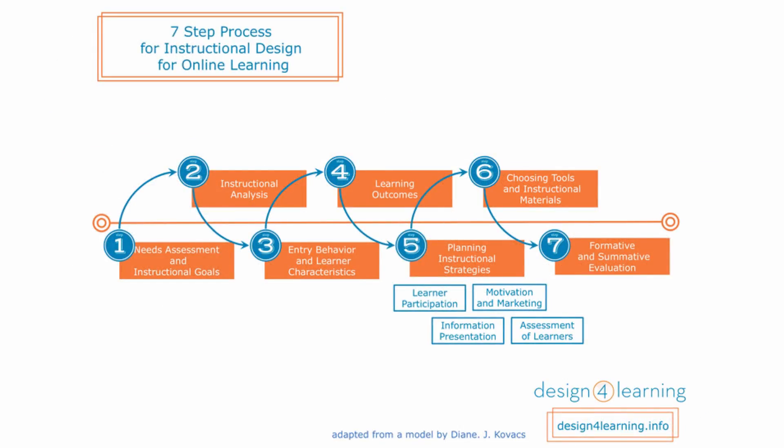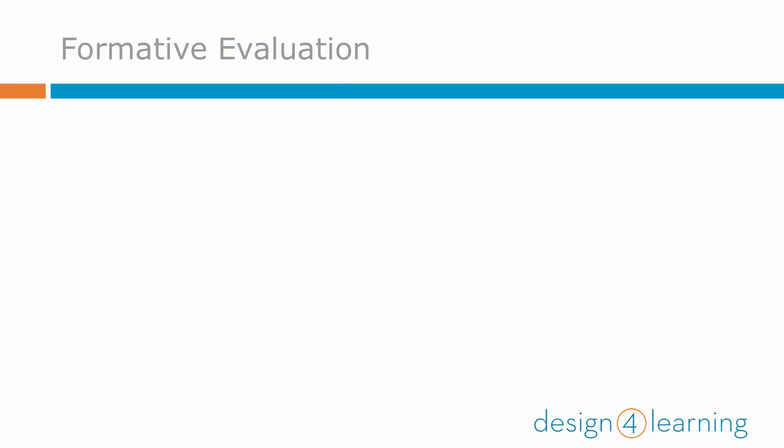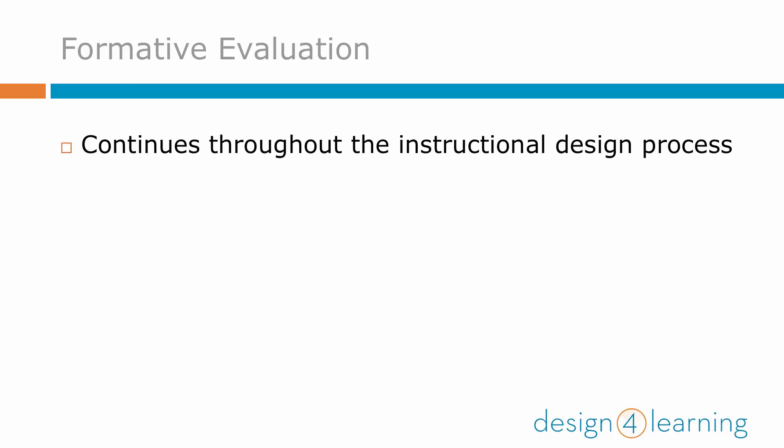We'll dig deeper into both of these components of Step 7 of our seven-step approach. Formative evaluation provides informative feedback during the instructional design process in order to improve your methods and materials before you fully implement your instruction.